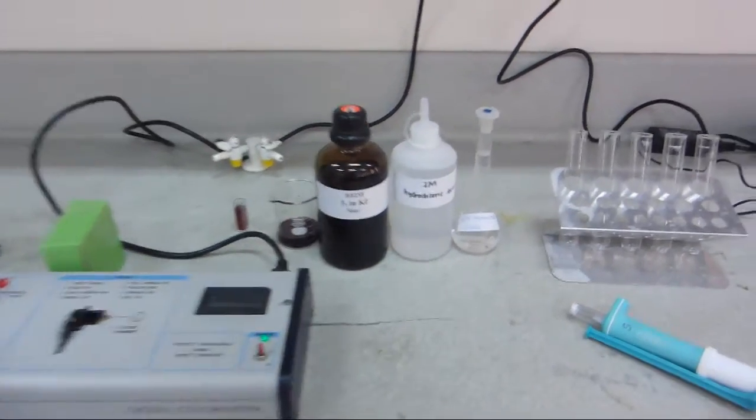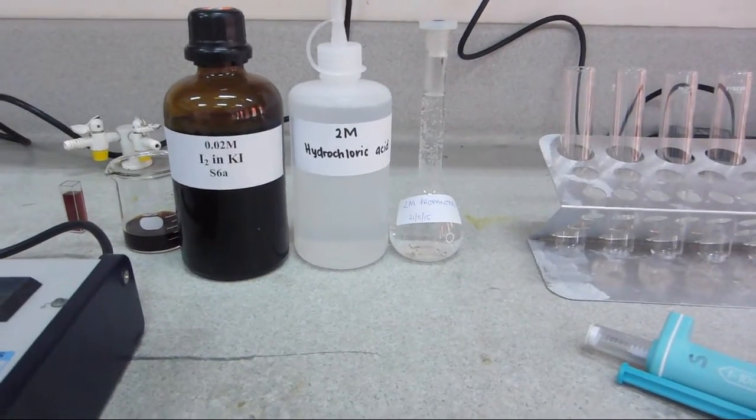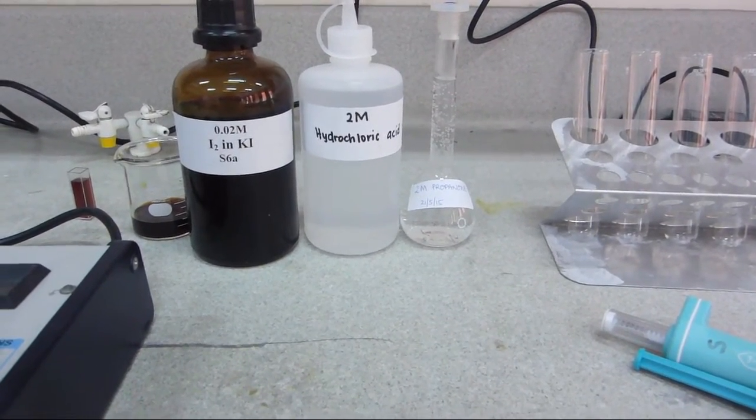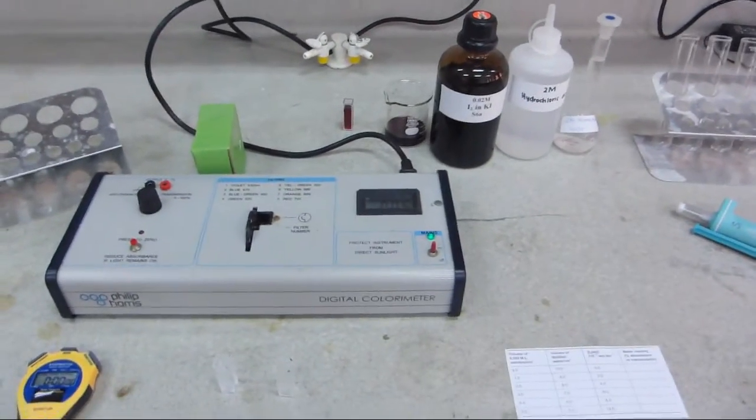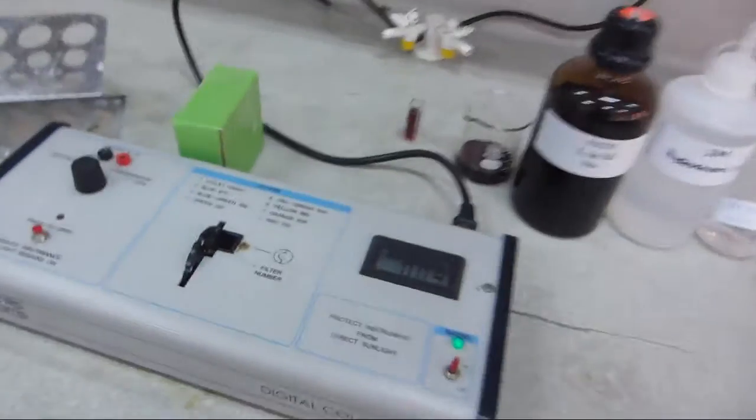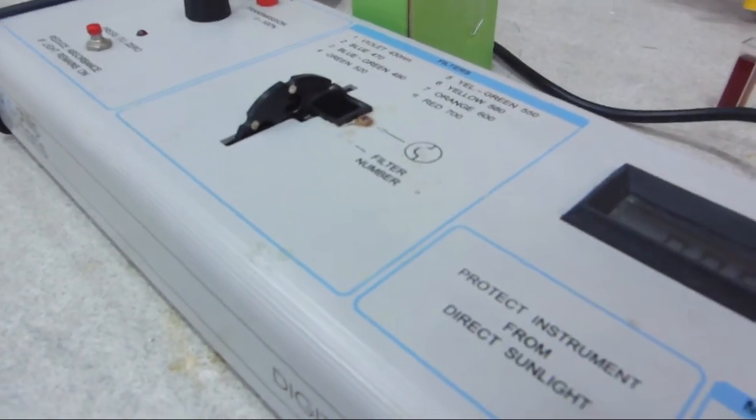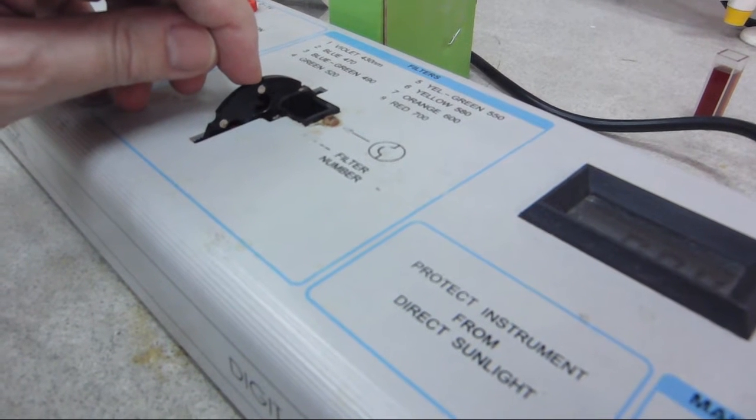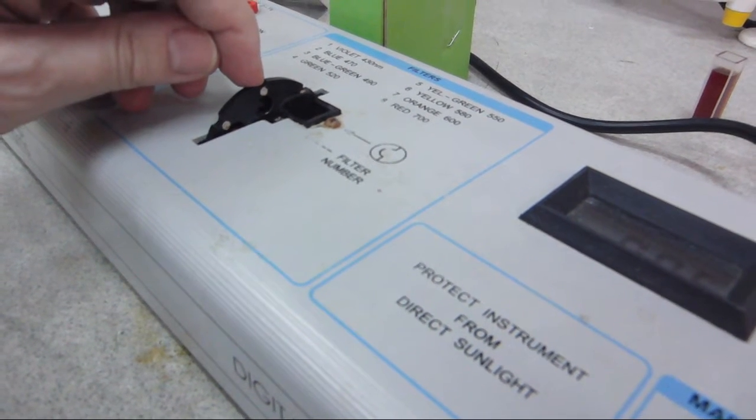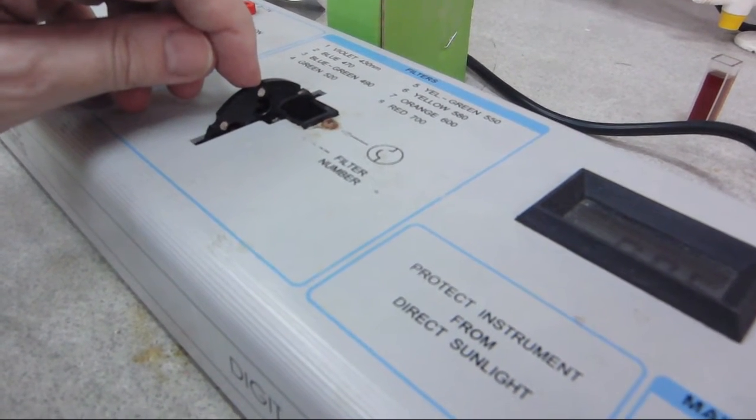In this experiment, we'll be looking at the reaction between iodine, propanone, and hydrochloric acid, and we'll be monitoring the reaction in a colorimeter. You may be able to see that on this colorimeter, we've selected filter number three, the blue-green filter at 490 nanometers, as recommended in our worksheet.